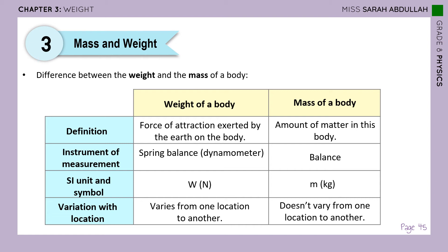Here is a summary table of the differences between mass and weight. Weight is the force of attraction exerted by the Earth on a body; mass is the amount of matter in the body. Weight is measured with a dynamometer or spring balance; mass is measured with a balance. Weight is expressed in Newtons (W); mass in kilograms (m). Weight varies from one location to another, whereas mass does not vary — it is constant.